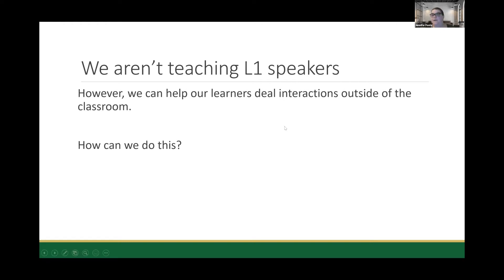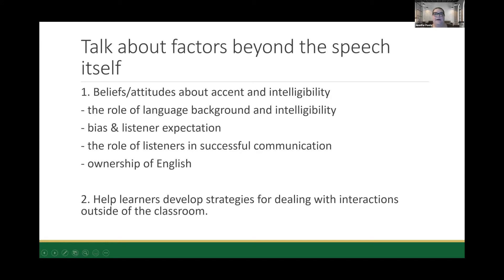So how can we do this? I have a lot of ideas and I'm going to focus on a couple of main ones. One is that I think it's important in pronunciation classes to talk about beliefs and attitudes around accent and intelligibility — not just identifying features that might cause an intelligibility issue and working on them, but also looking at outside factors. That can include things like the role of language background, issues around bias and listener expectation, the role of listeners in successful communication, and the ownership of English — the idea that the onus doesn't need to be always completely on the speaker. It's also good to help learners develop strategies for dealing with interactions outside of the classroom.